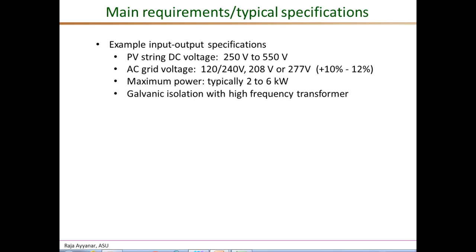As the name suggests, a string inverter operates from a single string of PV panels, and a single string can have anywhere between, say, 6 panels to about 15 panels or so. In order to be able to support these different numbers of PV panels, and also due to the fact that the PV voltage can vary significantly with temperature, the string inverters need to operate from a wide range of input voltages.